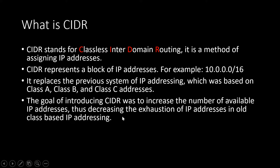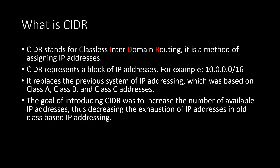Many IP addresses were wasted while creating networks. For example, if a company needed only 100 IP addresses, it would have to take a Class C address which provided 256 IP addresses, so 156 IP addresses got wasted. This wastage of IP addresses was addressed in CIDR notation.